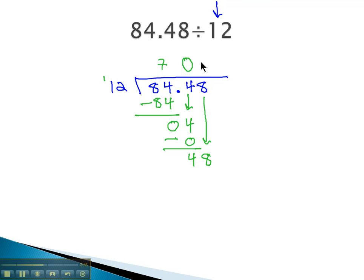12 goes into 48, 4 times. 4 times 2 is 8, 4 times 1 is 4. Subtract, and we get 0. We have 0, nothing left to bring down.